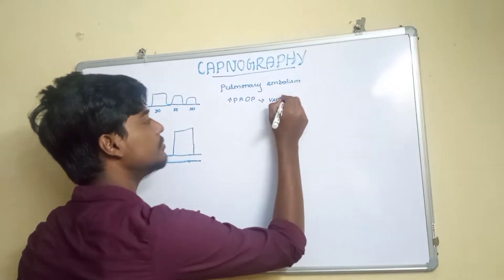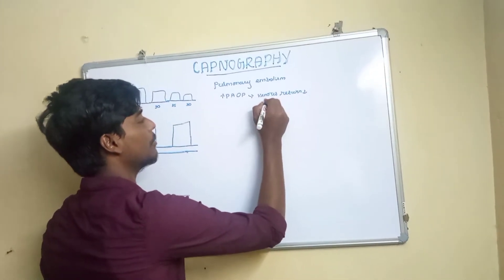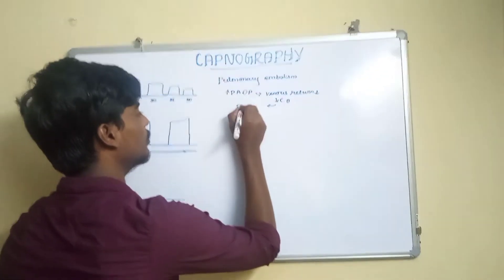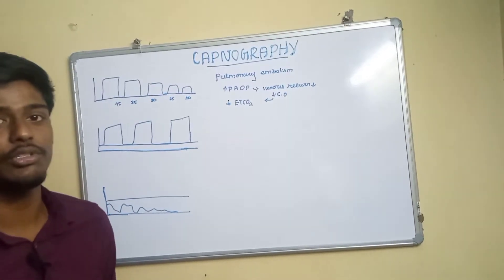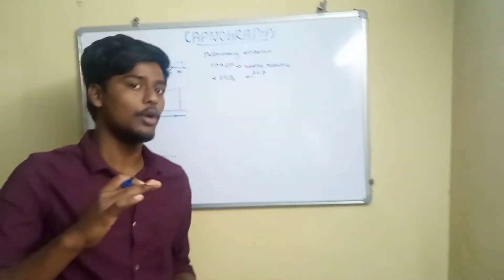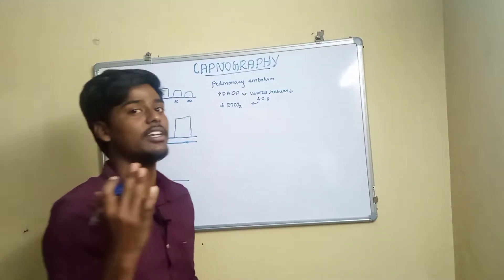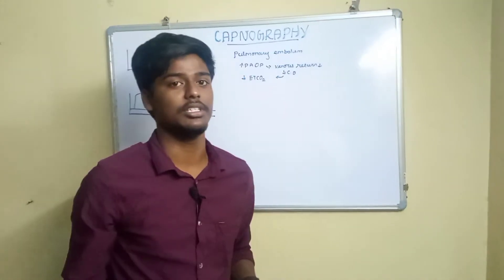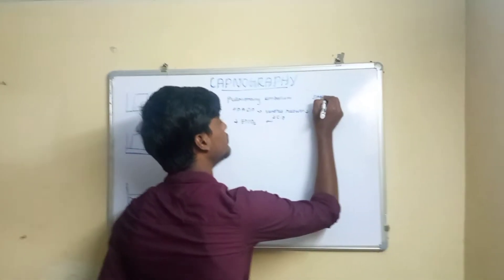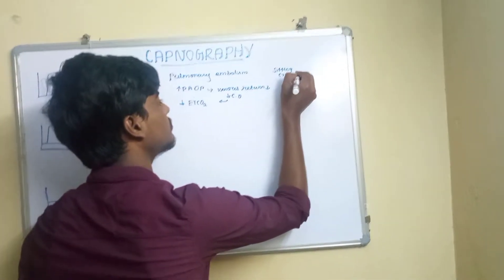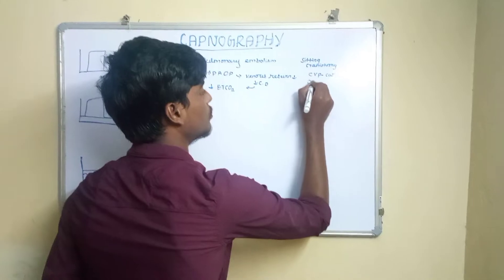Pulmonary embolism. If we have a circulation problem, it will reduce cardiac output, and the ETCO2 value is exponentially reduced. How can we be in this situation? Sitting craniotomy, posterior head surgery, CVP central venous catheter insertion, some orthopedic surgeries, and laparoscopic surgery — all have chances of air embolism. How do we detect it intraoperatively? By ETCO2 drop.